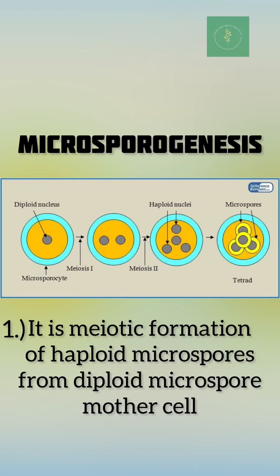What is microsporogenesis? It is the meiotic formation of haploid microspores from a diploid microspore mother cell.